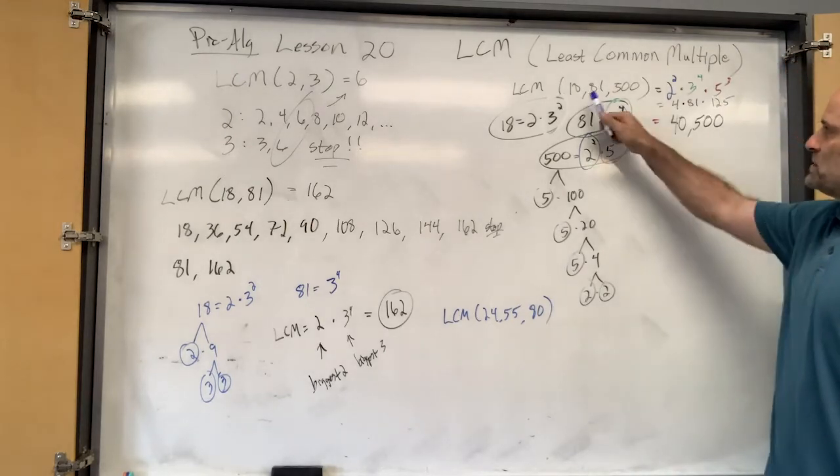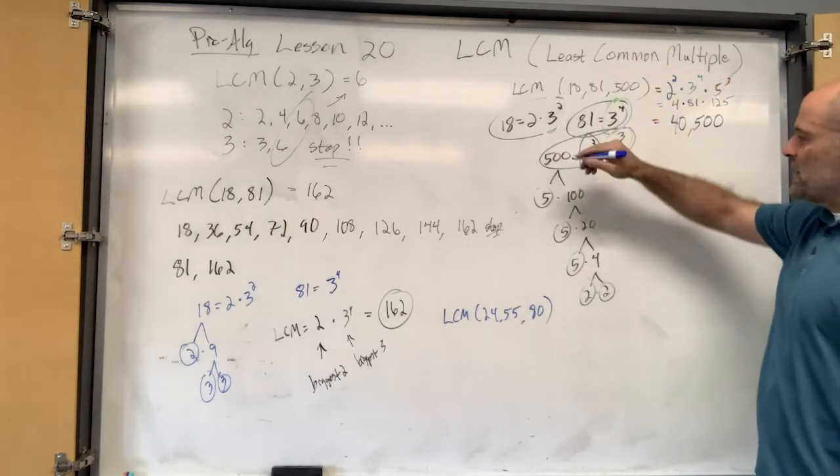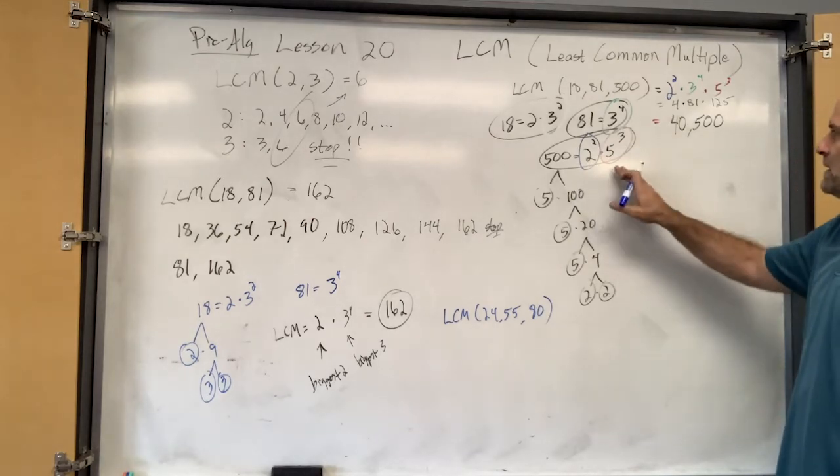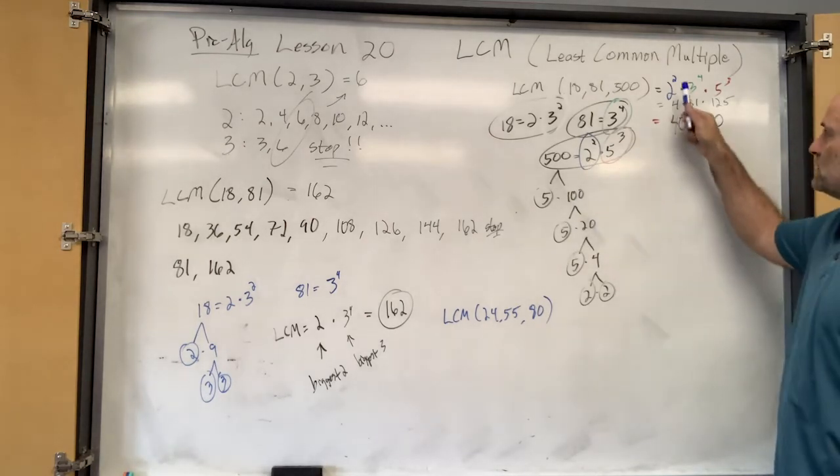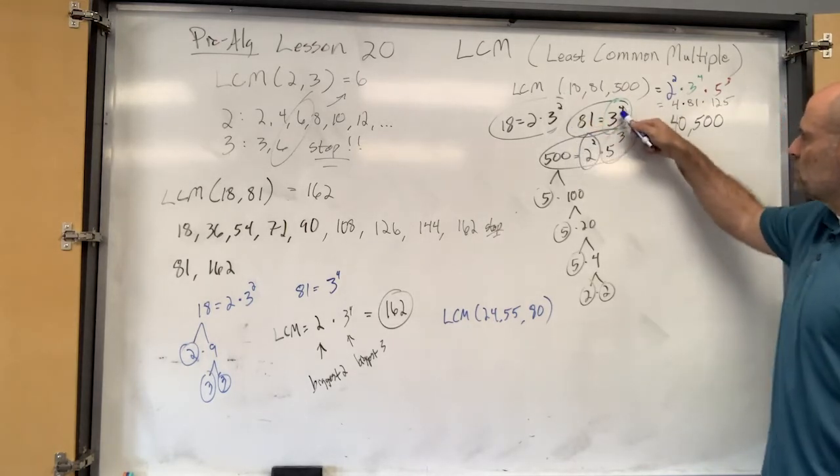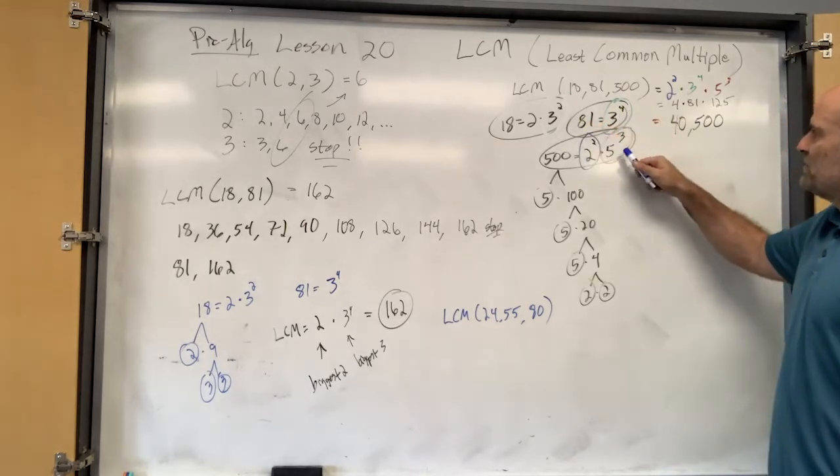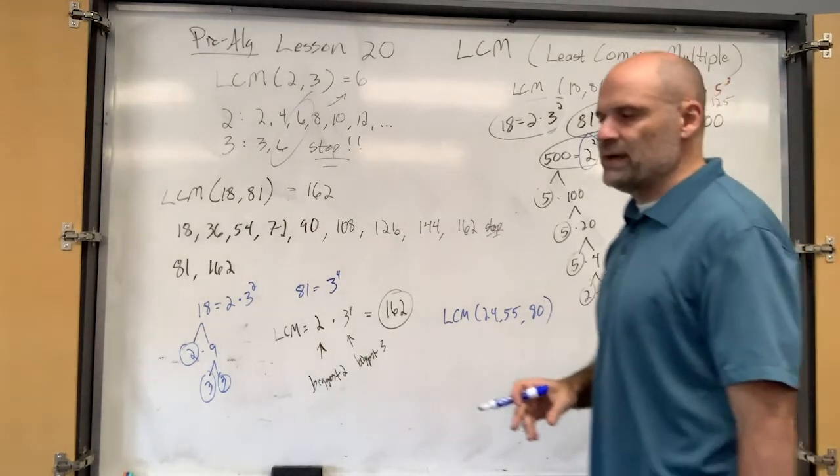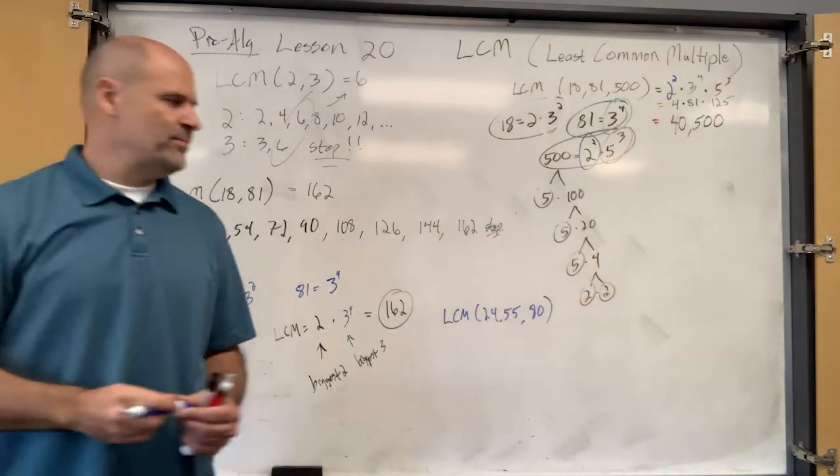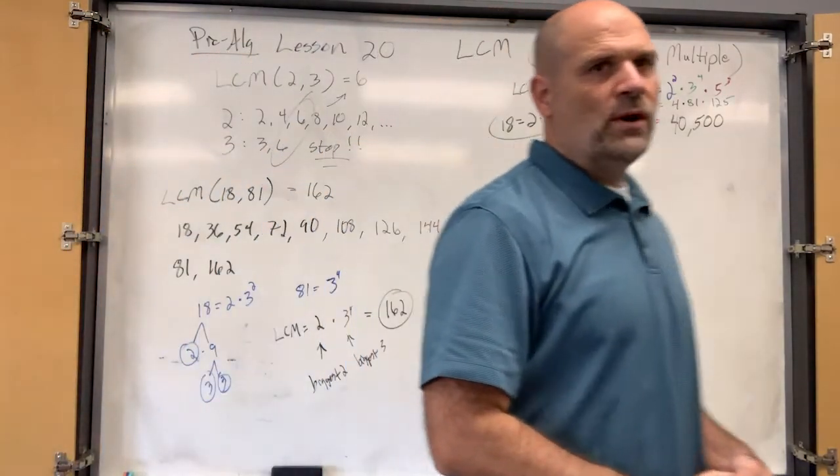Least common multiple of these three numbers. Well, if you did the factor tree and found the prime factorization, then you get this stuff. So the biggest 2 is a 2 squared because there's a 2 squared. Biggest 3 is still a 3 to the 4th. Biggest 5 is 5 to the 3rd. Multiply all that together. You get 40,500. What did you get, Nathan? 13,200. Nope. Come on.